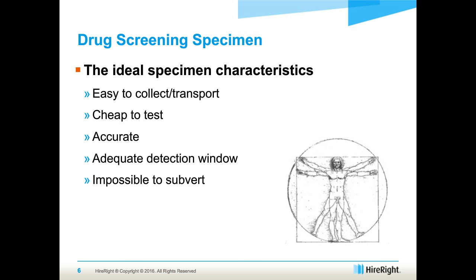So what's the ideal drug screening specimen? Back at the beginning when people were talking about drug screening for risk mitigation — since people who are illicit drug users do cost a considerable amount of money per year based upon increased rates of workman's comp injury, decreased productivity, and higher medical cost expense — when you look at ideal specimen characteristics, the one thing you want is something that's easy to collect and easy to transport. You don't want anything that is a biohazard that needs special handling to transfer from the collection site to the laboratory.